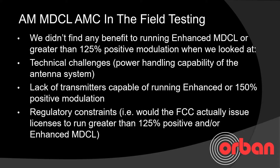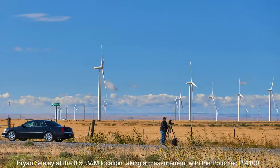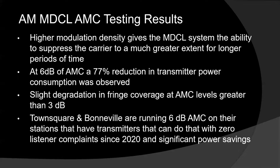At that point we decided we'd simply run the testing at 125 percent positive modulation at AMC 3, 4, 5, and 6 dB. Here's a picture of the test setup out in the middle of nowhere at the 0.5 mV/m location, with Brian Seeley making a measurement with the Potomac PI-4100.